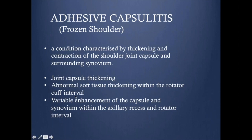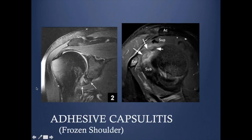Abnormal soft tissue thickening within the rotator cuff interval is very important — it is like synovitis at the rotator cuff interval. There can also be variable enhancement of the capsule and synovium whenever contrast is given, but usually we don't administer contrast. So most cases depend on the edematous thickened capsule and synovitis or thickening at the rotator cuff interval. Here you can see significant thickening with edema at the inferior capsule and thickening at the rotator cuff interval between the supraspinatus and subscapularis — classical for adhesive capsulitis.